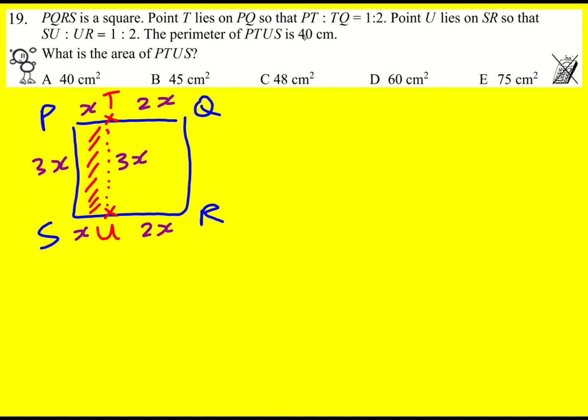So we know the perimeter is 40. I can add these up. It must be that 8x is equal to 40, and therefore x is equal to 5.